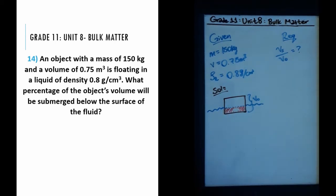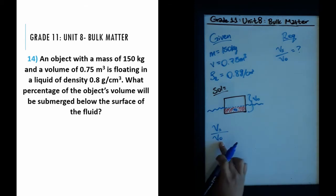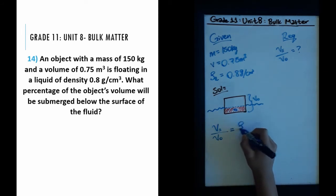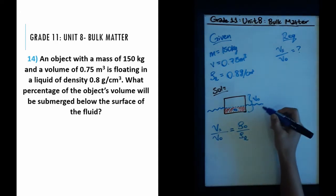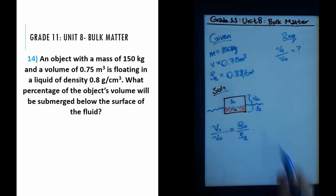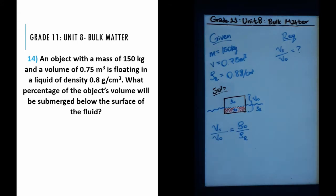The submerged volume is represented as V_s. The percentage submerged is V_s divided by V_o. There is a very easy formula for this: the ratio equals the density of the object (ρ_o) divided by the density of the liquid (ρ_l). So we need to find the density of the object over the density of the liquid to get this percentage.